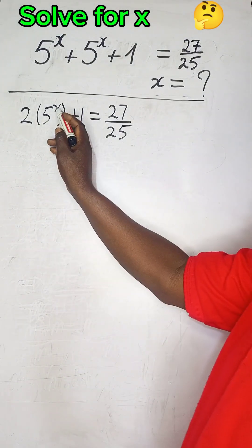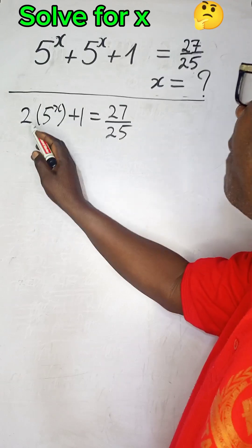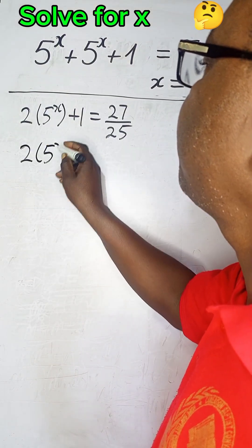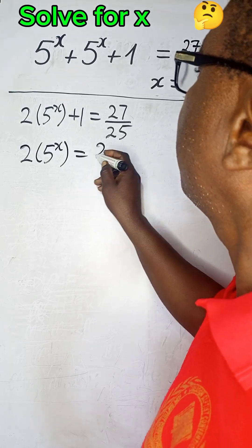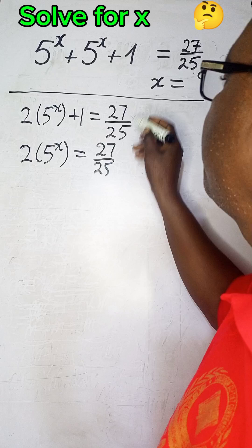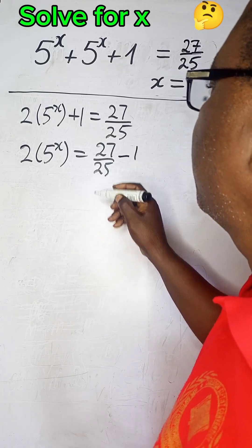Remember, we want to solve for x. Let's take this quantity from the left-hand side to the right-hand side. We are left with 2(5^x) = 27/25. This is positive 1. We take it this way, it will become minus 1.